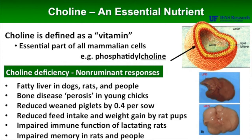The immune system of the lactating rat is impaired if she doesn't have enough choline. And lastly, regarding its role in memory function with rats and people, a lack of choline has shown that the mental acuity of those species is reduced. So we have a pretty nice list of benefits that occur in species if choline is in the diet in sufficient amounts.